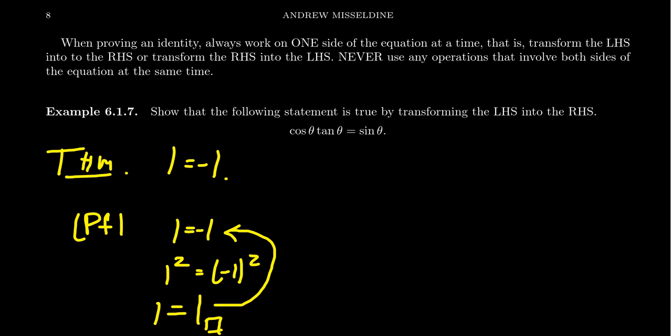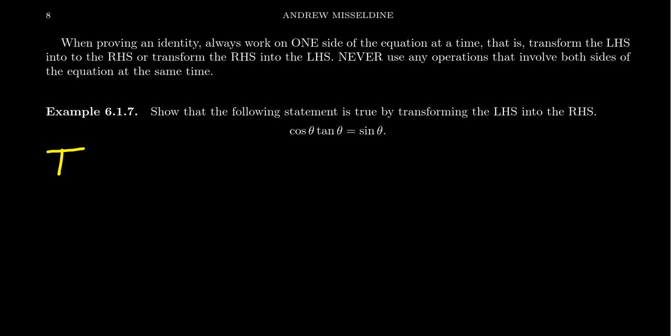So we don't work simultaneously with both sides of the equations. So what someone would do, conversely, like with a situation like this, is like, oh, cosine tangent equals sine. Well, let's see what we could do there. We could divide both sides by cosine theta. The cosines there cancel. Then you get tangent theta equals sine theta divided by cosine theta.